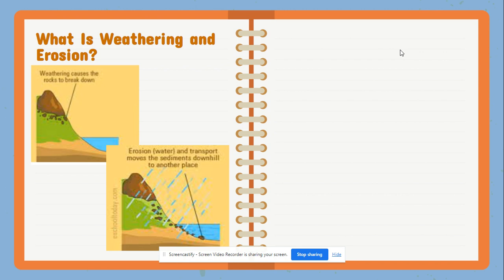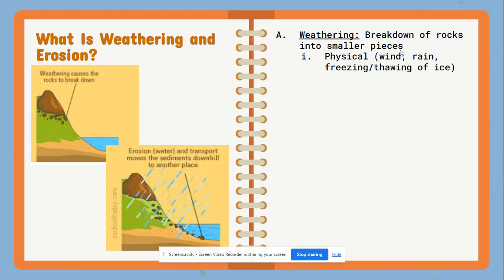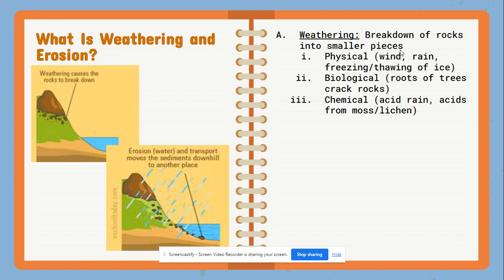That concept of how an ecosystem forms simply from bare rock comes back up again here. Weathering is the breakdown of rocks into much smaller pieces, and that can be done physically — usually through wind, rain, or even the thawing and freezing of ice. It could also be done biologically, so the roots of trees can actually break rock, cause fractures, and crack them, or it can be done chemically through acid rain or other acids.